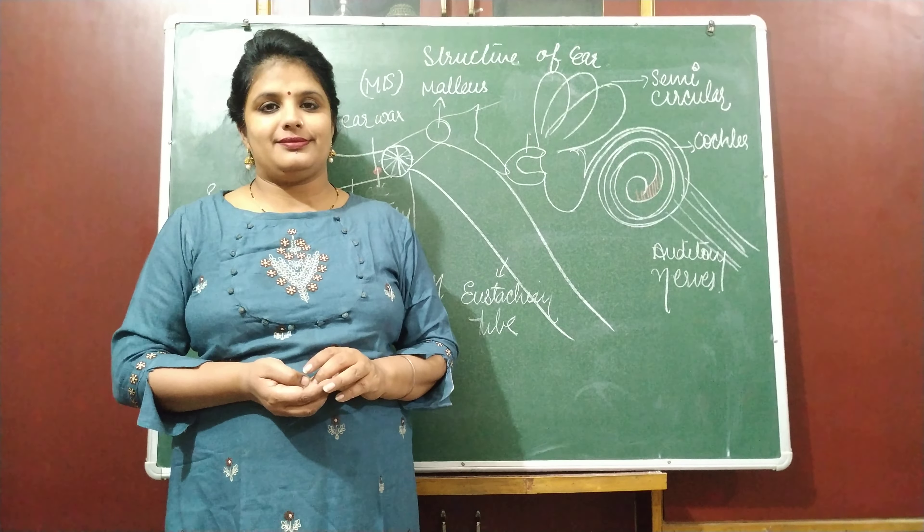So this is the basic structure of the ear. In the next video, we are going to discuss this structure further in detail. We will discuss all the bones again, semicircular canals and cochlea again, and how the auditory nerves carry messages from the ear to the brain. Till then, revise this diagram, read the text from your book, and leave your queries here so I can discuss them in the next video. Till then, take care. Goodbye.